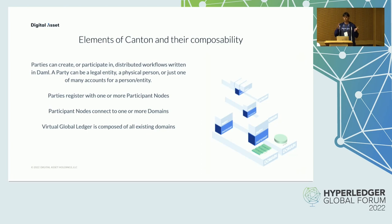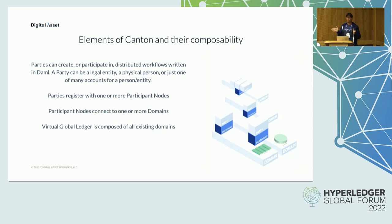A domain can also be implemented in a centralized way if a trusted operator exists. All transaction data transferred between participant nodes is end-to-end encrypted and only selectively shared with other participant nodes on a strict need-to-know basis. The domains do not learn the transaction's content, and Canton guarantees the integrity of ledgers even in the presence of malicious participants.